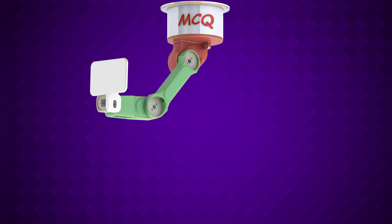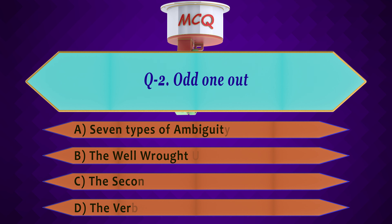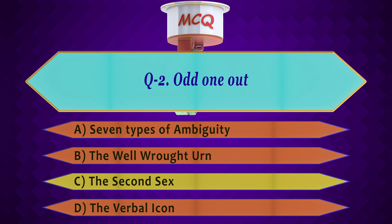The second question is: Find the odd one out — Option A: Seven Types of Ambiguity, Option B: The Well Wrought Urn, Option C: The Second Sex, Option D: The Verbal Icon. The answer is Option C, The Second Sex. All the others belong to New Criticism texts, while The Second Sex belongs to Feminist Criticism.